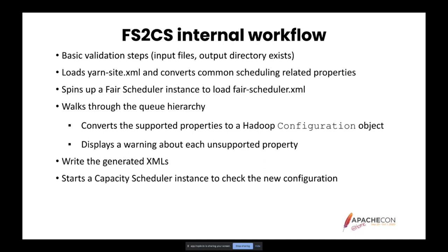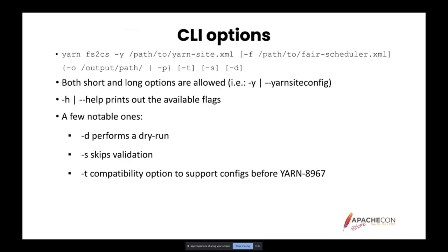Let's look at some of the features of this tool — specifically the CLI options. The -y option is necessary as it tells the tool where the YarnSite.xml is. Options in brackets are optional flags and options in curly braces are mandatory. Either the user specifies an output directory where the output files will be written, or they can tell the tool to print the configuration files to the console. Notable parameters include -h which prints available flags, -d which performs a dry run showing whether conversion is possible, and -s which skips validation so the tool won't start the Capacity Scheduler instance to validate the converted configuration.